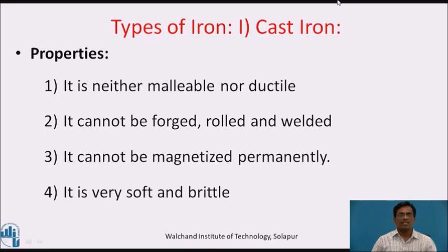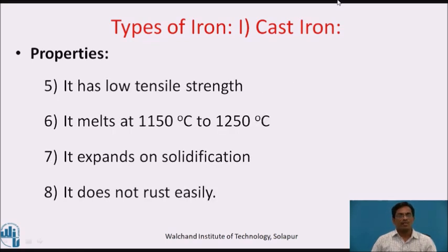Properties of cast iron: it is neither malleable nor ductile. It cannot be forged, rolled or welded. It cannot be magnetized permanently. It is very soft and brittle. It has low tensile strength. It melts at 1150 to 1250 degrees Celsius. It expands on solidification. It does not rust easily.